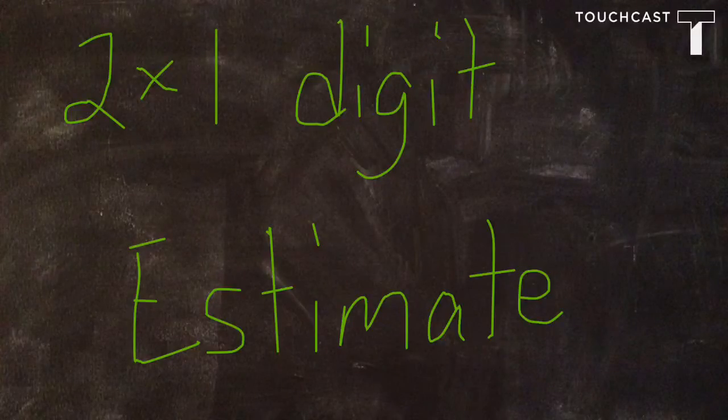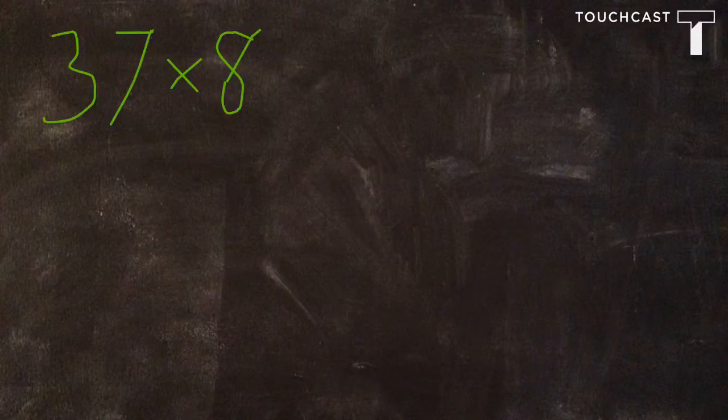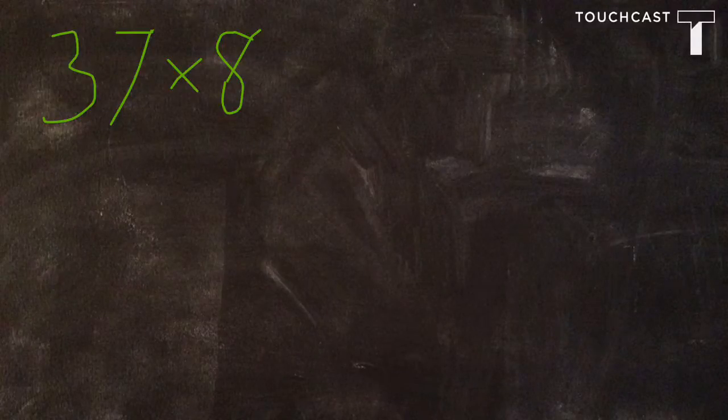Here we're going to look at a two-digit times one-digit number, but we are finding the estimate. So what we are going to estimate is 37 times 8.